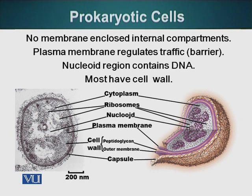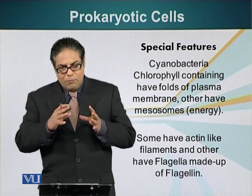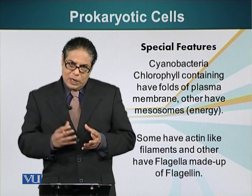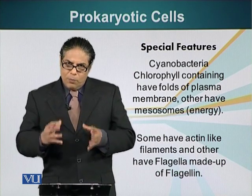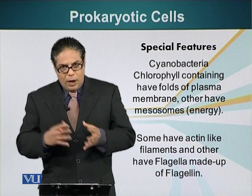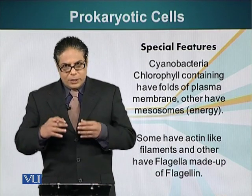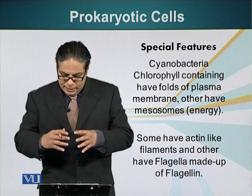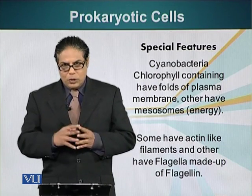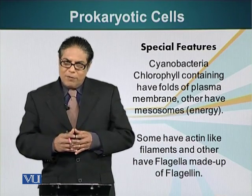They don't have any membrane-enclosed organelles. Some cells have special features — for example, cyanobacteria can perform photosynthesis, a process by which organisms capture light and use that energy to make complex molecules such as glucose, which can be used as a raw material for other molecules. Some bacteria have actin-like filaments, but it is not actual actin. Some bacteria also have flagella, but their flagella are not made up of actin filaments as in eukaryotic cells — instead, they are made up of a different type of protein called flagellin.